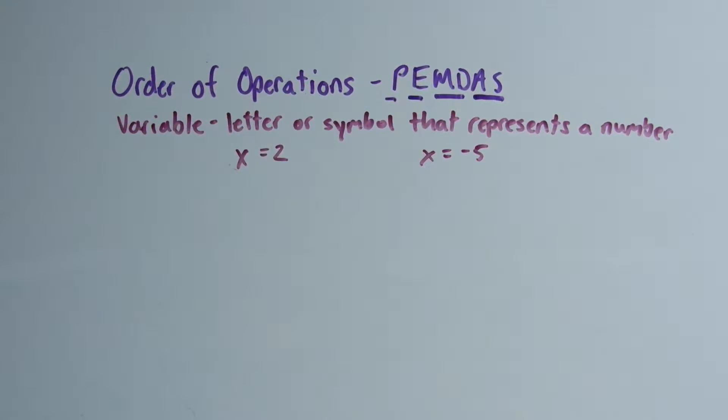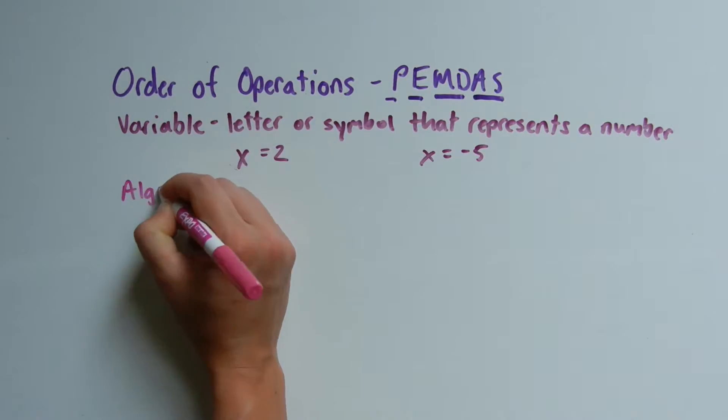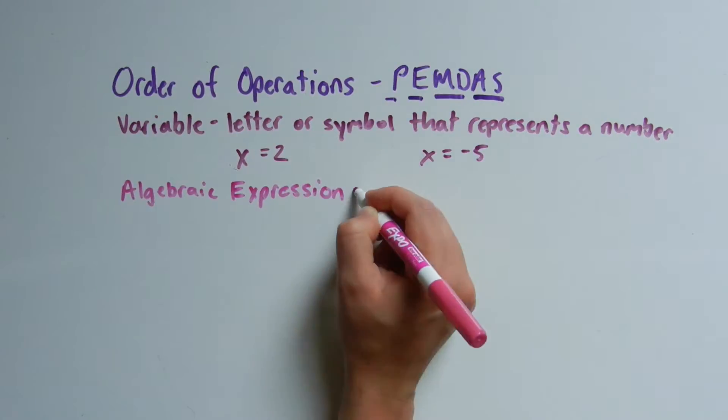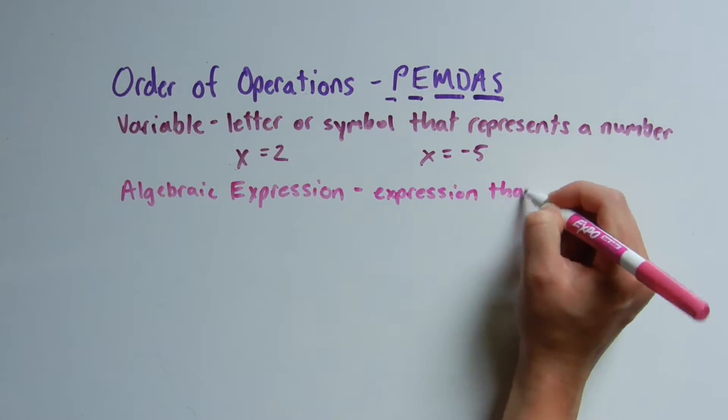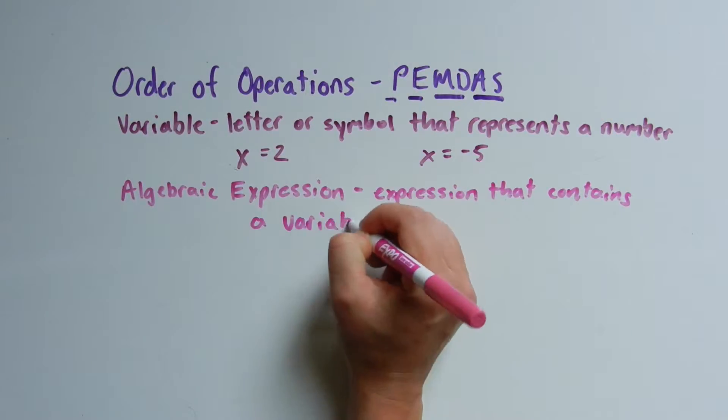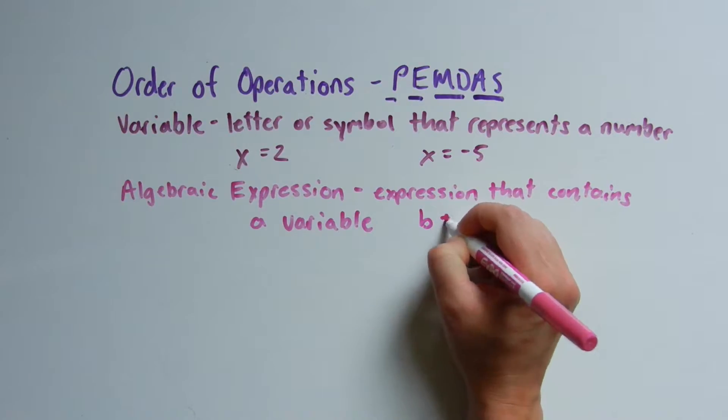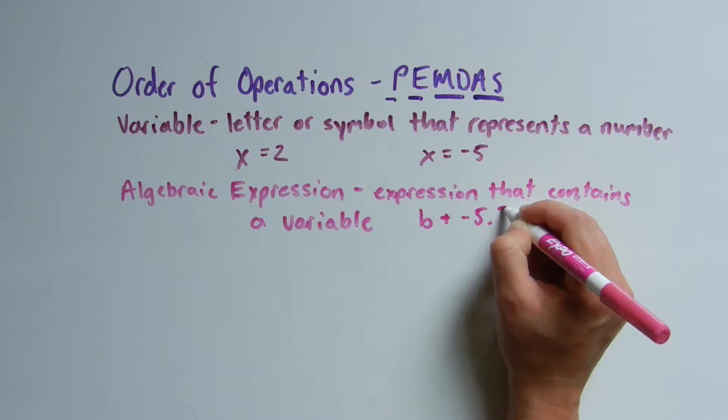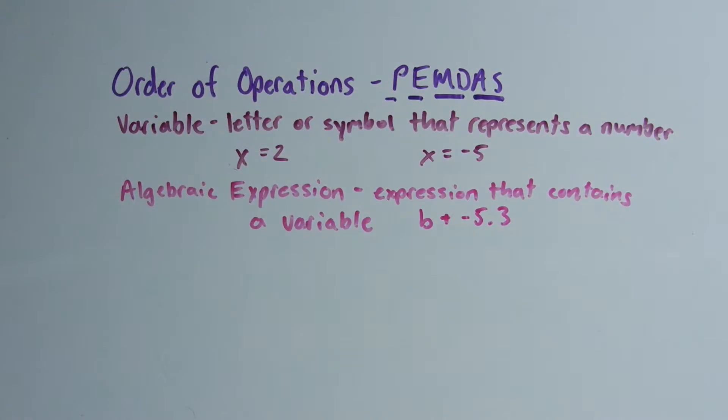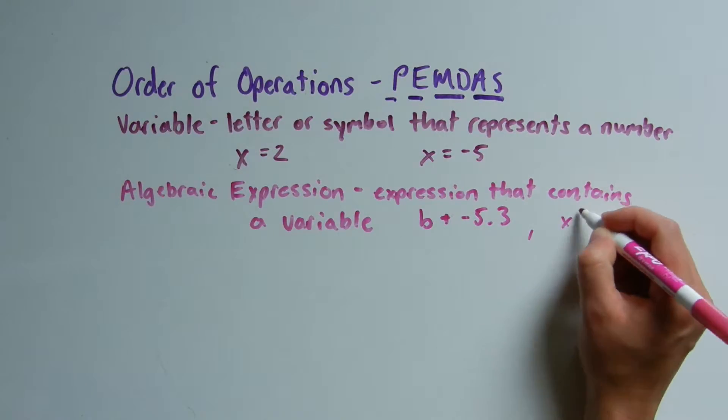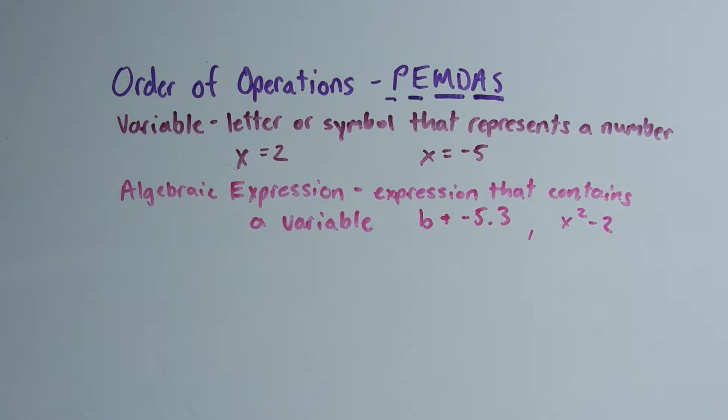An algebraic expression is a mathematical statement that contains a variable. An example of an algebraic expression could be b plus negative 5.3, or you could have x squared minus 2. Those are algebraic expressions because they contain a variable.